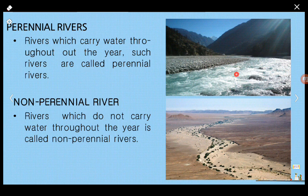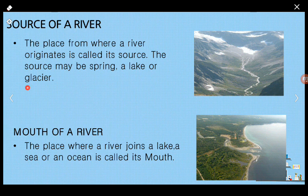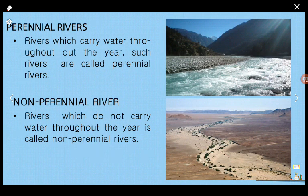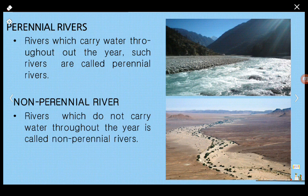The second type is a non-perennial river. Non-perennial rivers are those rivers that do not contain water throughout the year. In the image you can see a dry river bed. In these rivers, water is present only during the rainy season. Once the rainy season is over, the river dries off. Therefore they do not contain water throughout the year. Such rivers are known as non-perennial rivers.